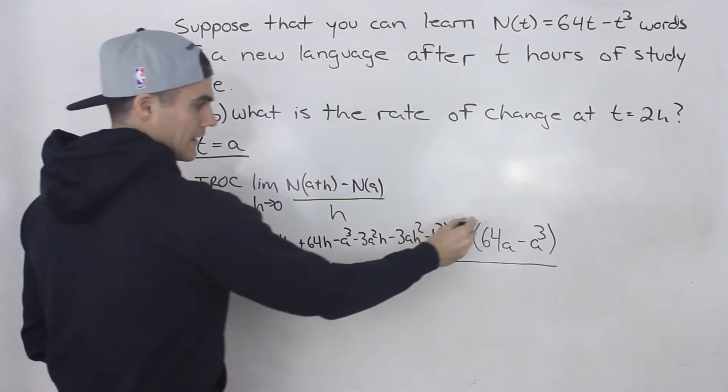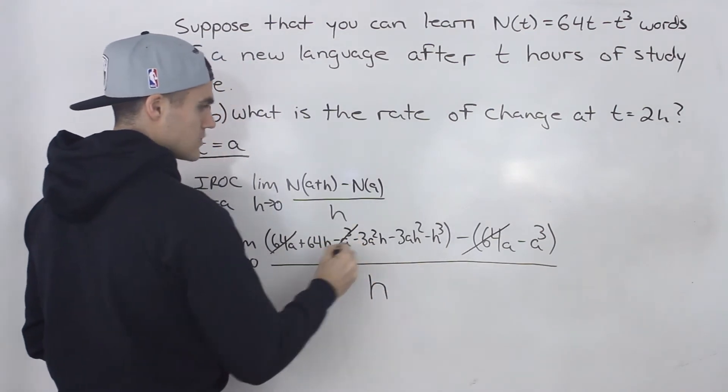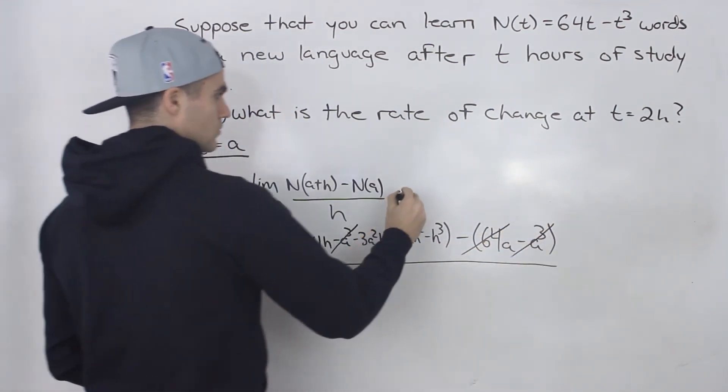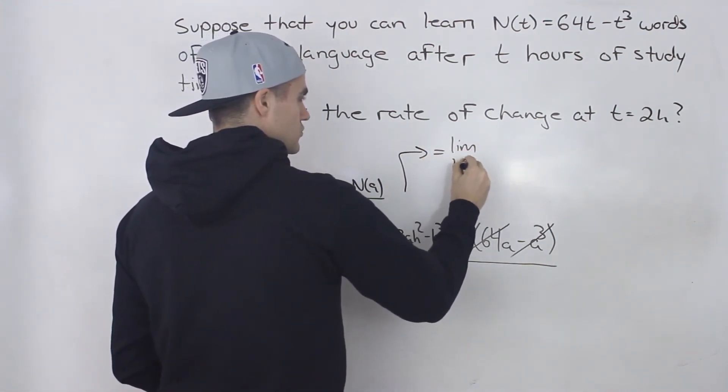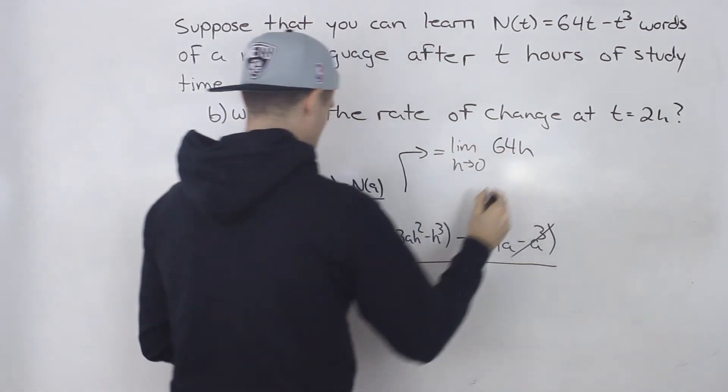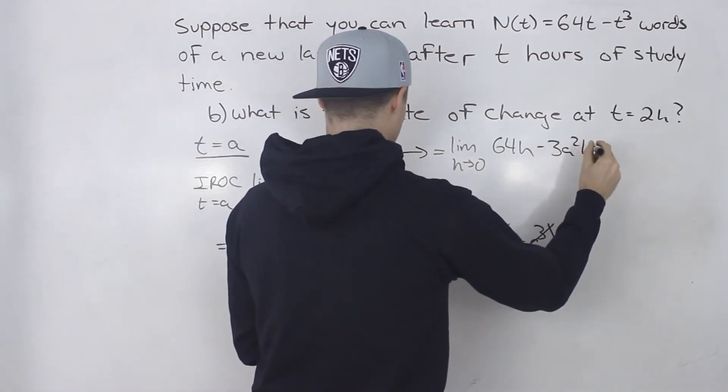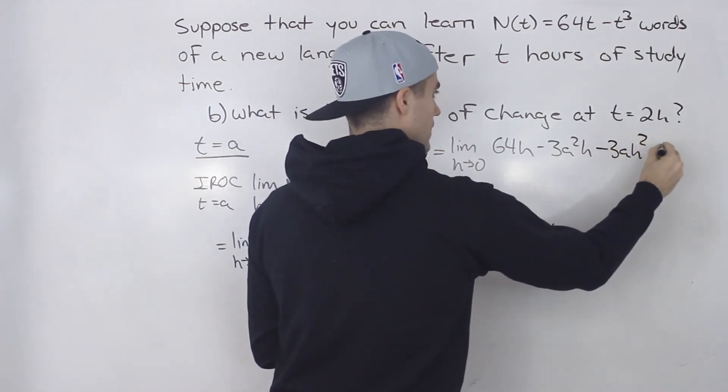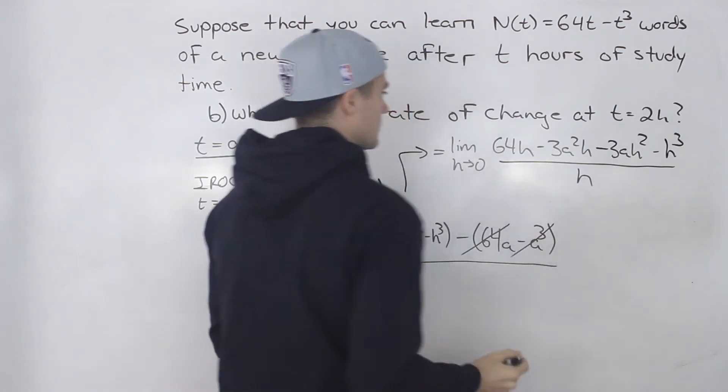So if we bring that negative inside this bracket, notice that the 64a's will cancel out, and then the a cubes will cancel out as well. So we'll just be left with the limit as h approaches 0 of 64h minus 3a squared h minus 3ah squared minus h cubed. And this is going to be all over h.